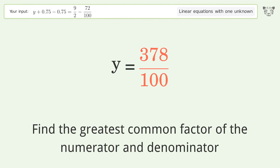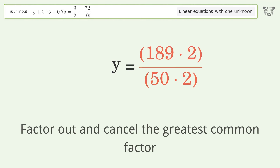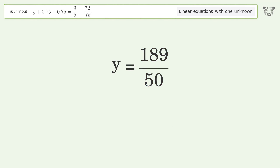Find the greatest common factor of the numerator and denominator. Factor out and cancel the greatest common factor. And so the final result is y equals 189 over 50.